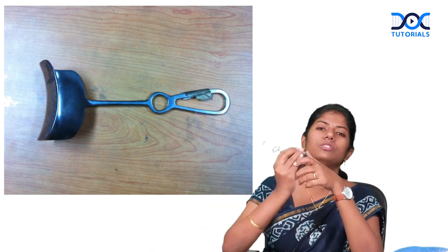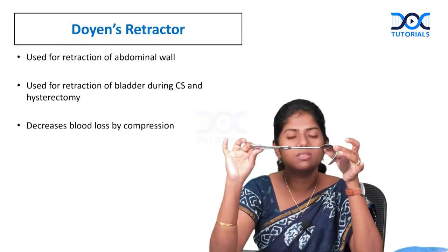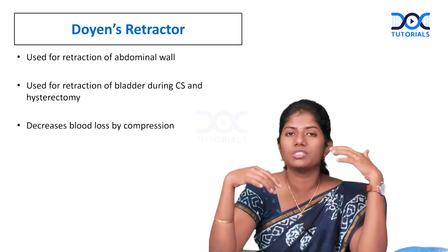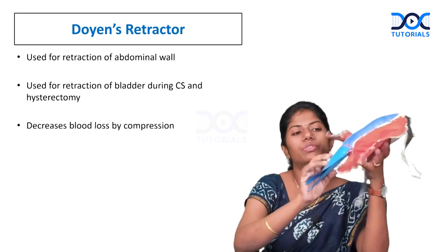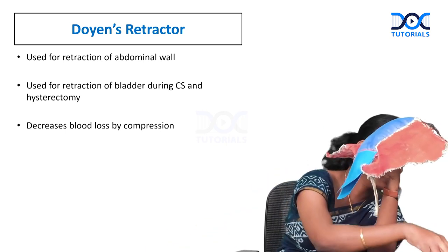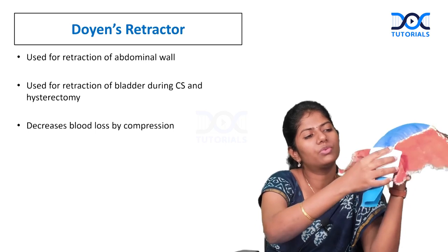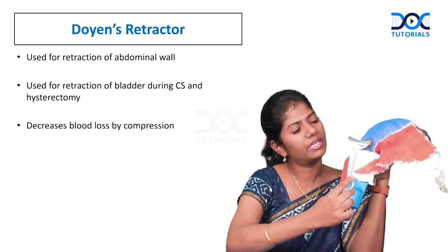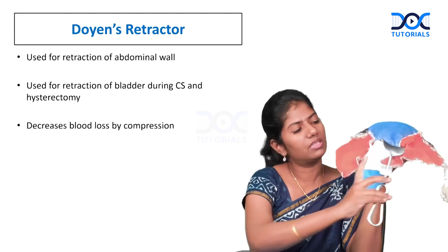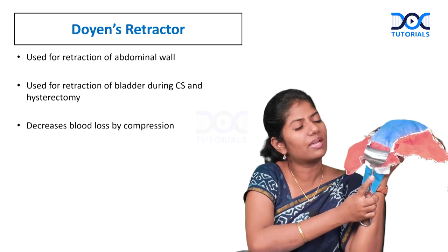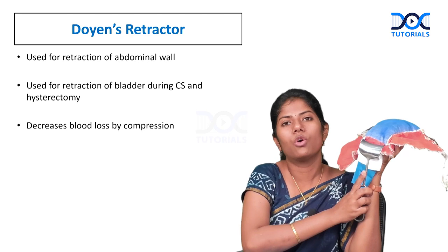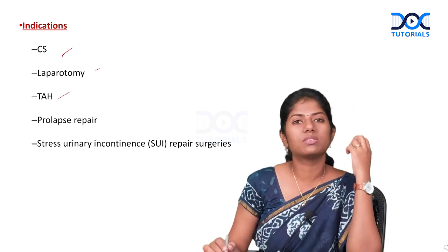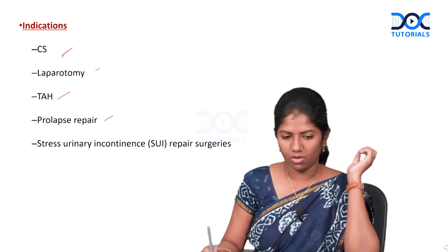The Doyen's retractor is used to retract the anterior abdominal wall during cesarean section. We separate the utero-vesical fold of peritoneum and place this retractor between the bladder and the uterus to drag the bladder down so it does not interfere with the operating area. It is also used during laparotomy, abdominal hysterectomies, and repair of prolapse.